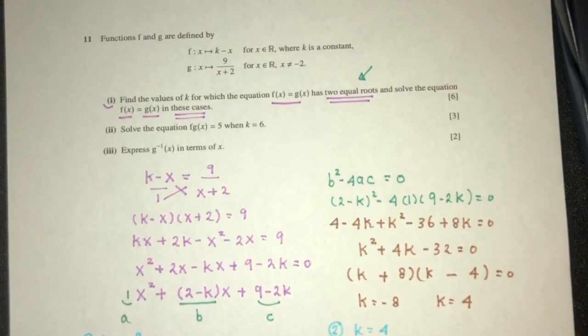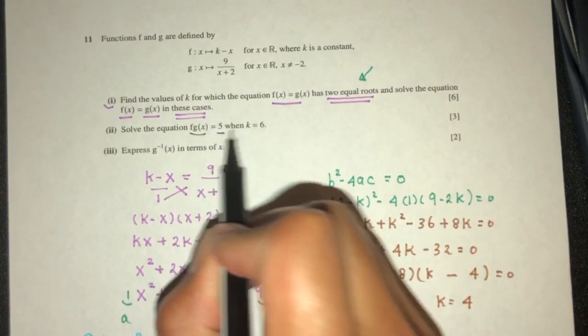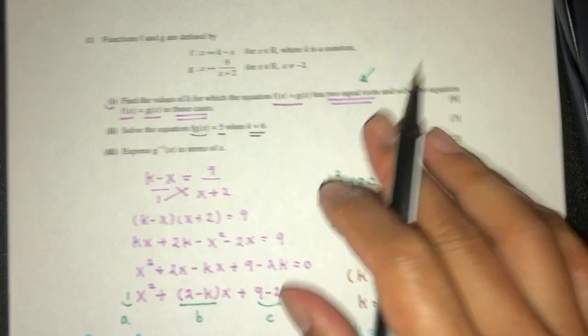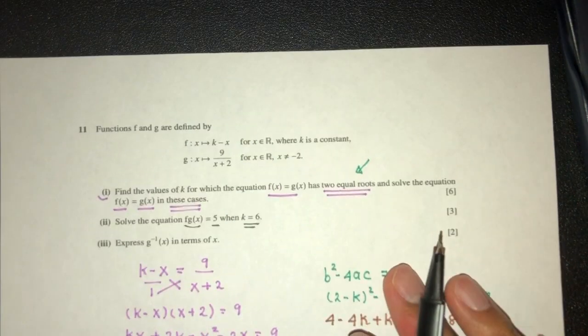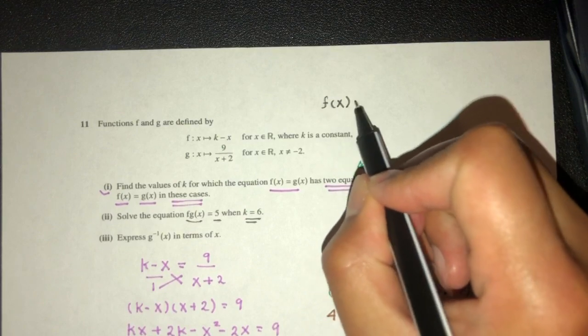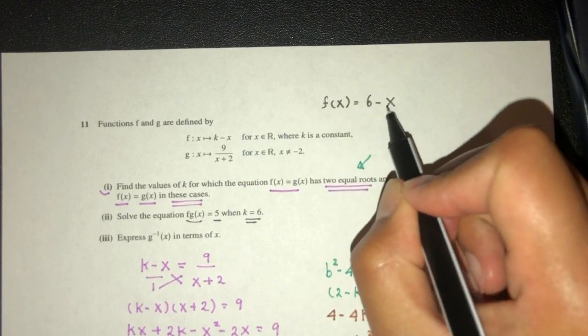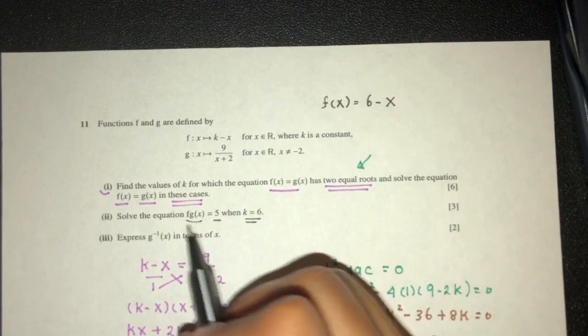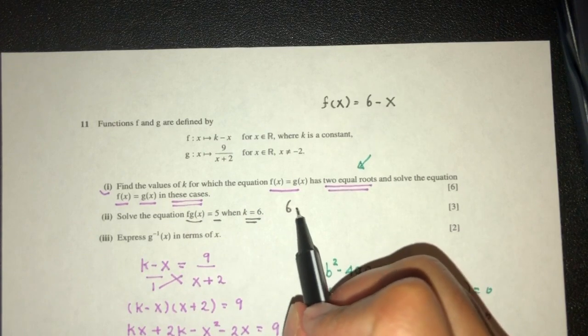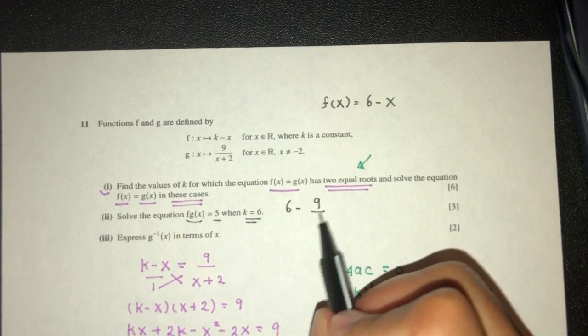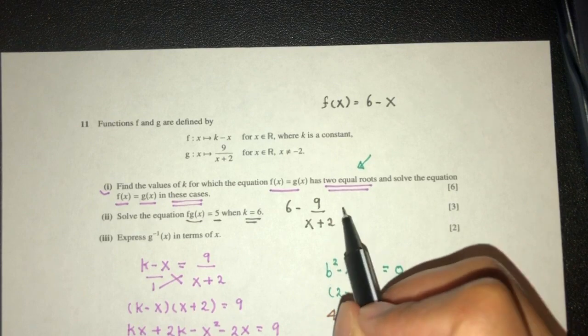Now for part 2, we have to solve the equation when k is 6. So right now f(x) is equal to (6 - x). This will be 6 - g(x), that should be 9/(x + 2), equal to 5.